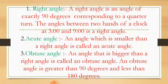A right angle is an angle of exactly 90 degrees corresponding to a quarter turn. If a ray is placed so that its endpoint is on a line and the angles are equal, they are right angles. The angle between two hands of a clock at 3 o'clock and 9 o'clock is a right angle.